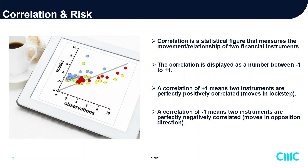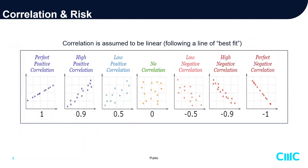In simple terms, a correlation of positive one means two instruments are perfectly positively correlated — they move in lockstep, one for one. Conversely, a correlation of negative one means two instruments are perfectly negatively correlated, meaning they move in opposite directions. To graph it simply, correlation is assumed to be linear, ranging from positive one all the way to negative one, and it can be any number in between.